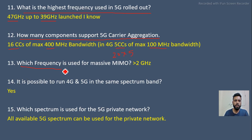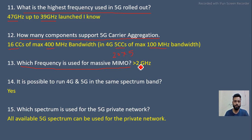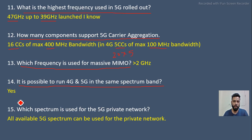Which frequency is used for massive MIMO? Any frequency greater than 2 GHz can be used for massive MIMO. Next question: is it possible to run 4G and 5G in the same spectrum band? Yes — many operators are already running 4G and 5G in the same spectrum band.